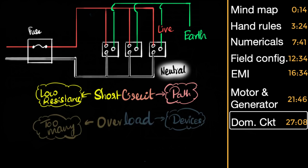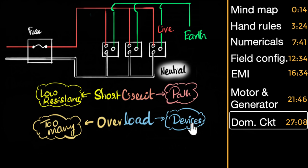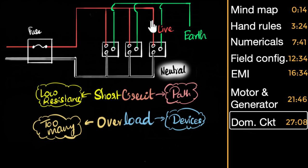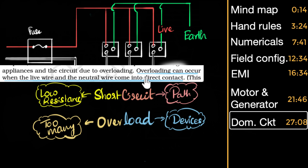Another situation is overloading — too many devices are connected. In a household circuit, devices are connected in parallel so that each device gets the same voltage, but each will draw a different current. If you connect too many devices, the total current drawn from the main live wire can exceed the maximum value — again, the fuse protects us. One last point: NCERT defines overloading as occurring when the live wire and neutral wire come into direct contact. We just saw that's short-circuiting, not overloading. So that part of NCERT is wrong — at least as of December 2019.